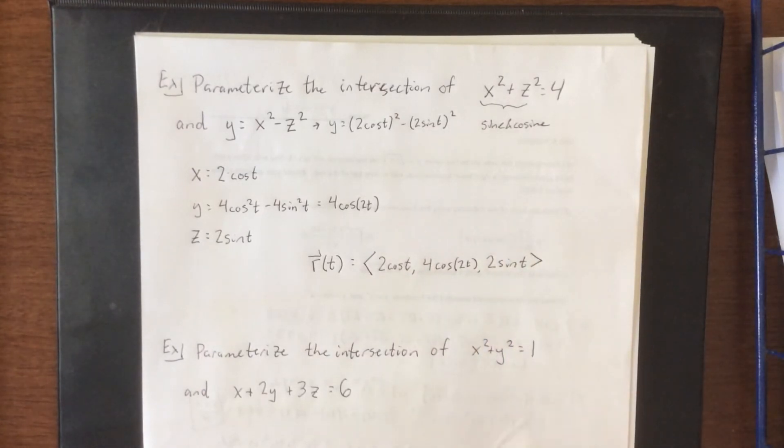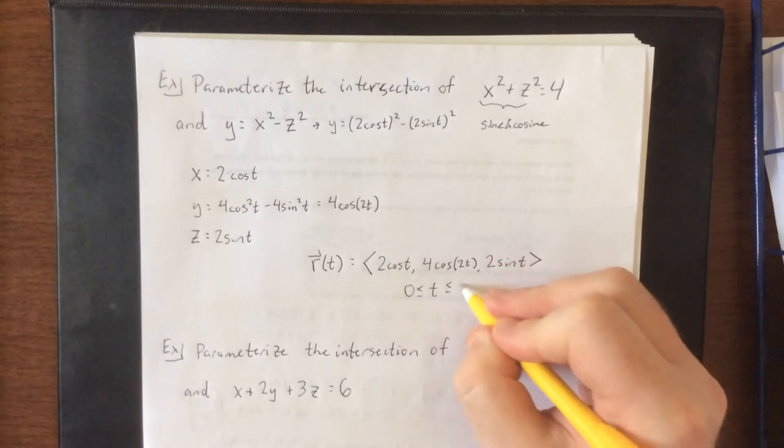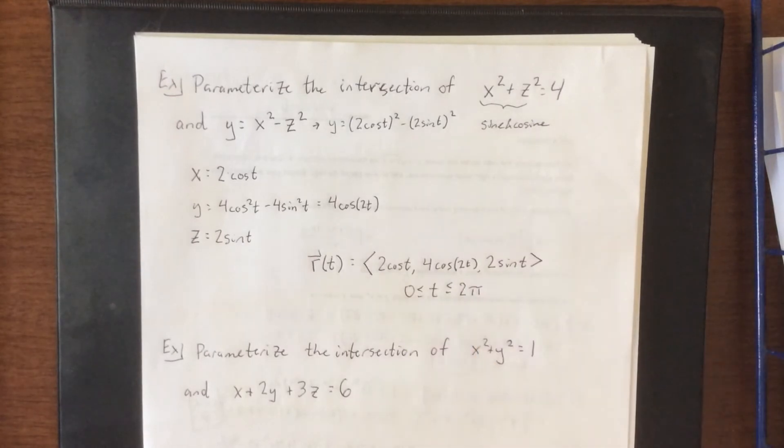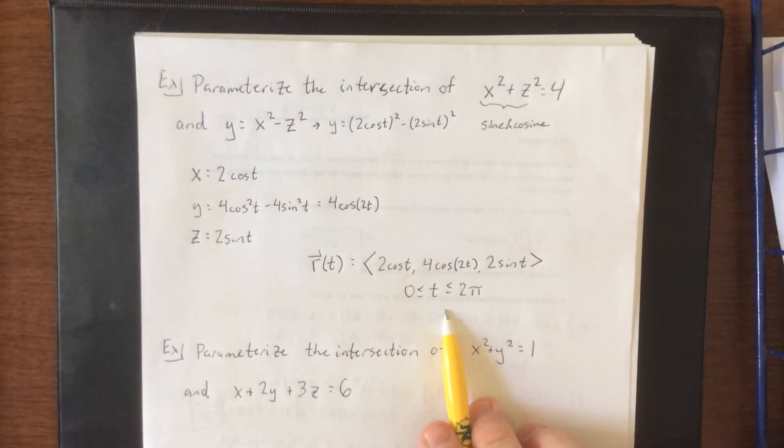If we wanted to throw a domain restriction on t, we could do one full rotation of the unit circle and simply say that t is going to go from zero to two pi. It's not 100% necessary to have that restriction on here, but that will sweep out the entirety of the space curve.